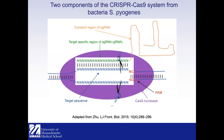The most widely used and well-characterized CRISPR system is from the bacteria S. pyogenes. This system has two components: one is Cas9, abbreviated as CRISPR-associated nuclease, depicted here as a purple blob. It is a nuclease with cleavage activity, and it also recognizes a motif called the PAM sequence — in S. pyogenes this is NGG.